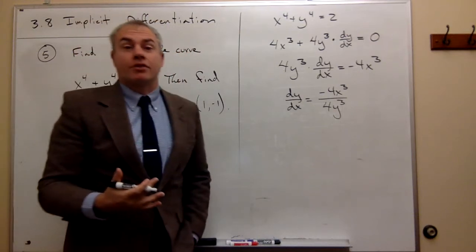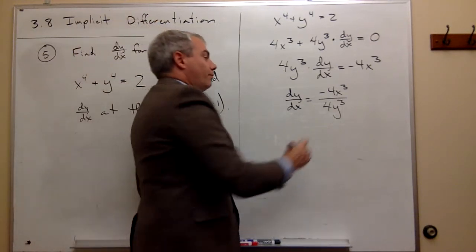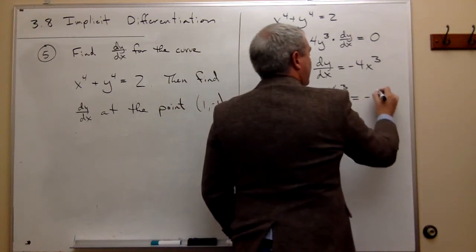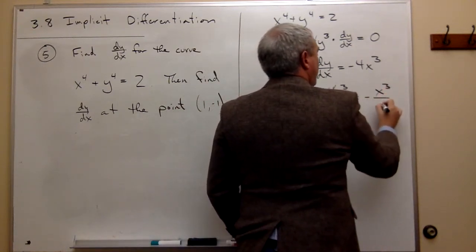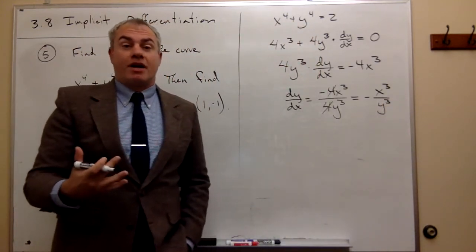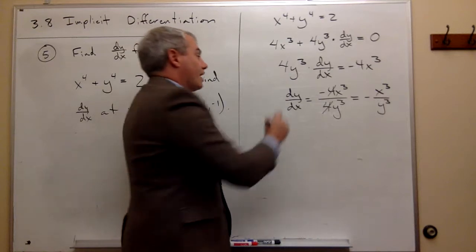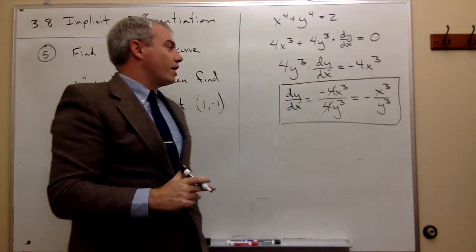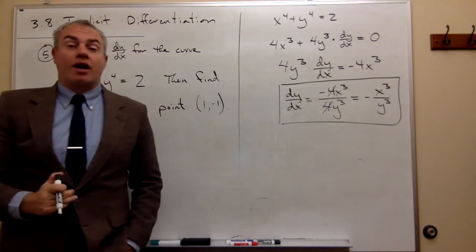And I get that dy/dx is equal to negative 4x^3 divided by 4y^3. I cancel the fours at this point, simplify a little bit more, cancel those fours, and I get negative x^3 over y^3. All right, so this is my derivative or my dy/dx. So let's box that in. I get that dy/dx is negative x^3 over y^3.